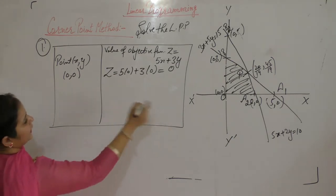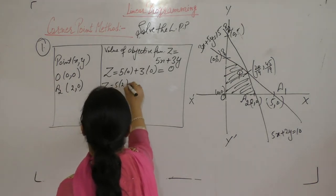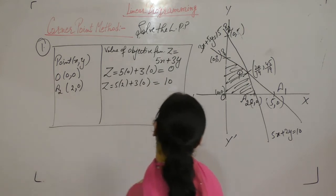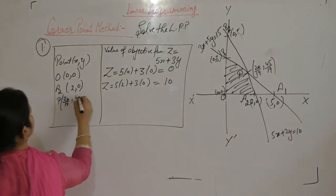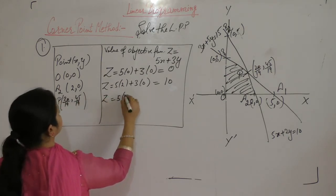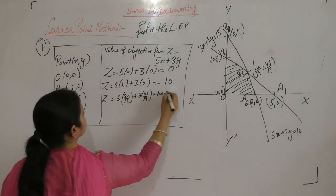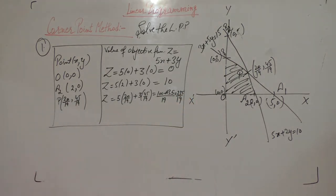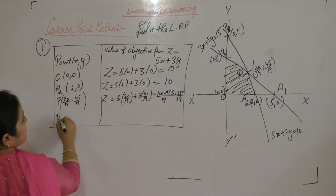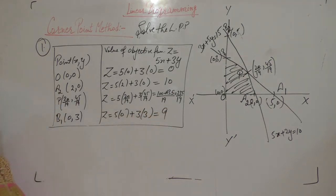Next point is A2, which is 2, 0. When x is 2, y is 0, so z equals 5 into 2, which is 10. After that, point P, which is 20 by 19, 45 by 19. This gives z equals 235 by 19. Then last is B1, 0, 3. x is 0, y is 3. Then this is 9.